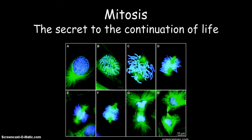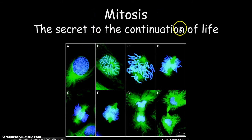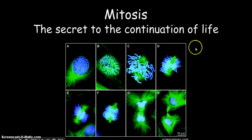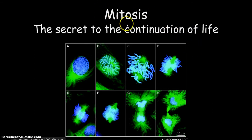Some things you're going to notice here on the video is that as I move my cursor around, the little yellow circle kind of follows it. And if I ever click on anything, you'll actually see that as well. So if I want to point to something, that's how I'm going to do it. So here's mitosis, and that's how you spell it. And here's my phrase: the secret to the continuation of life.